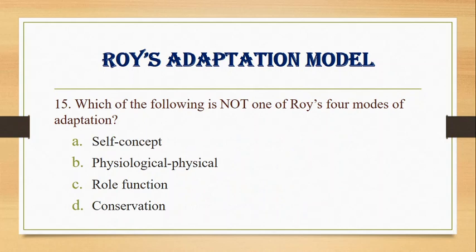Number 15. Which of the following is NOT one of Roy's four modes of adaptation? A. Self-concept, B. Physiological/Physical, C. Role function, D. Conservation. Answer: D. Conservation.